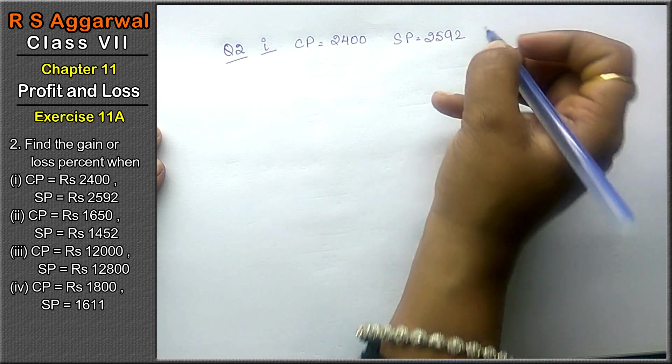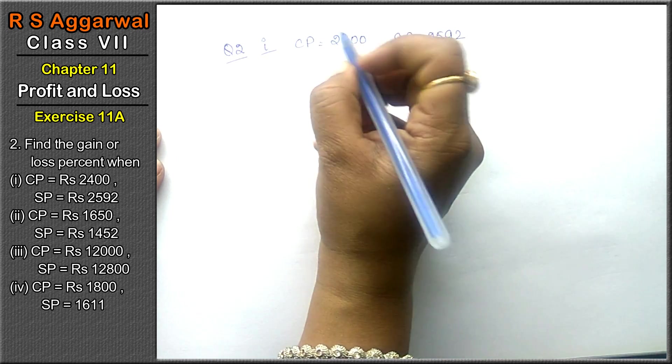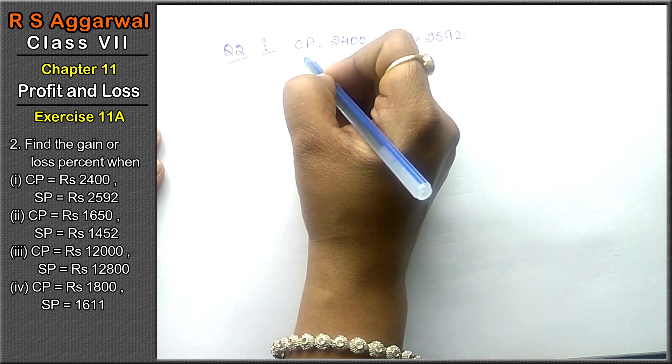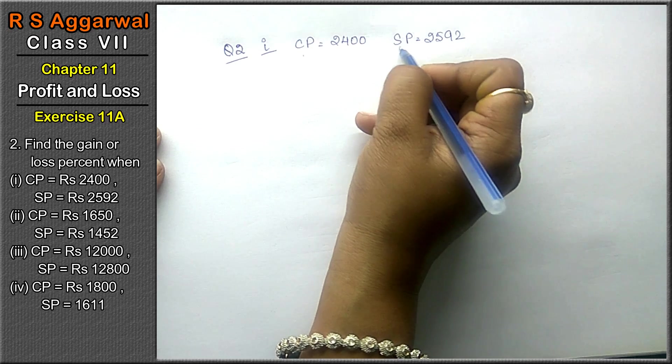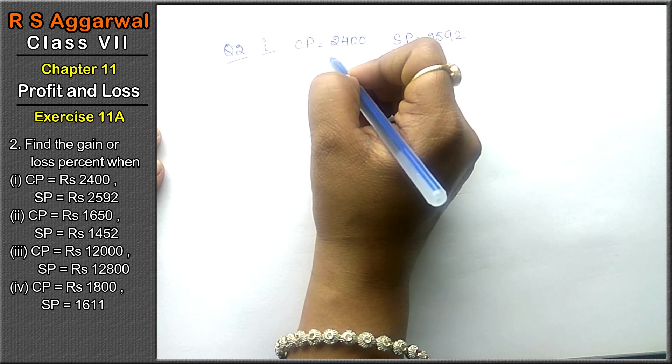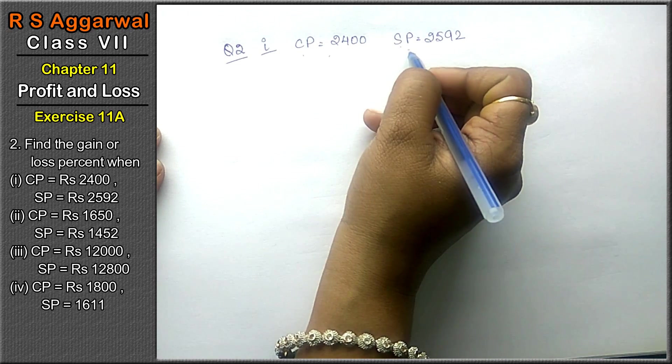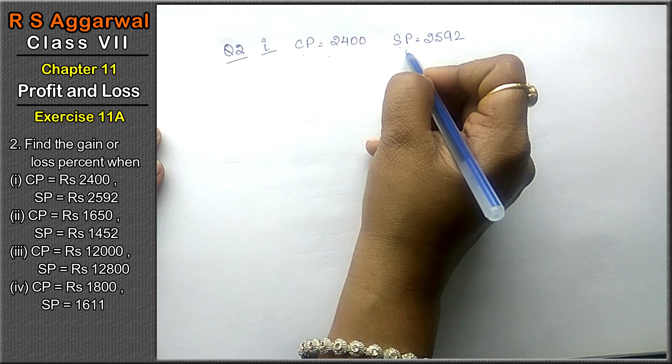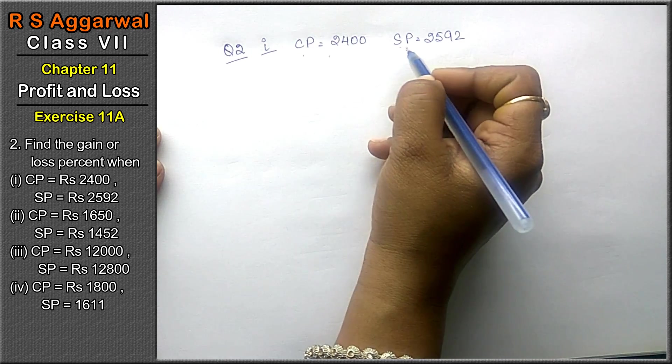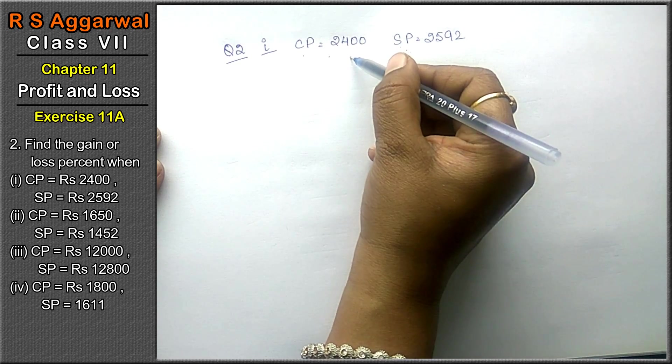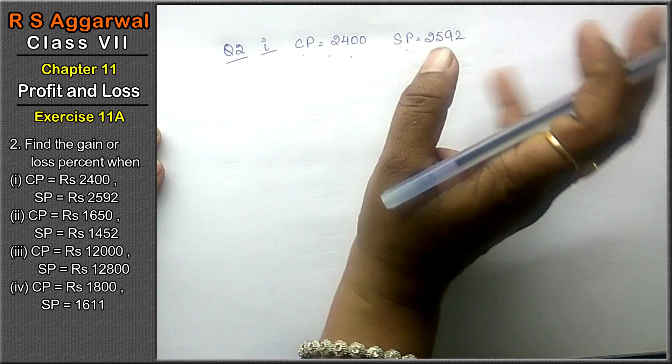Friends, when do we have loss or gain? If our CP is more than SP, our cost price is more and we sold it for less, then we have loss. But if we are selling for more and we bought it for less, then we have gain at the time.